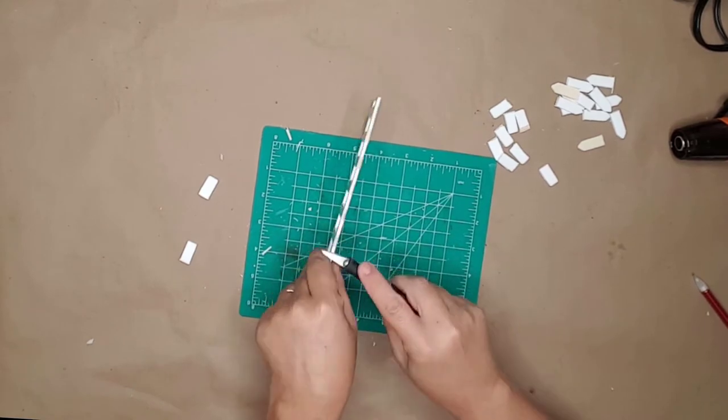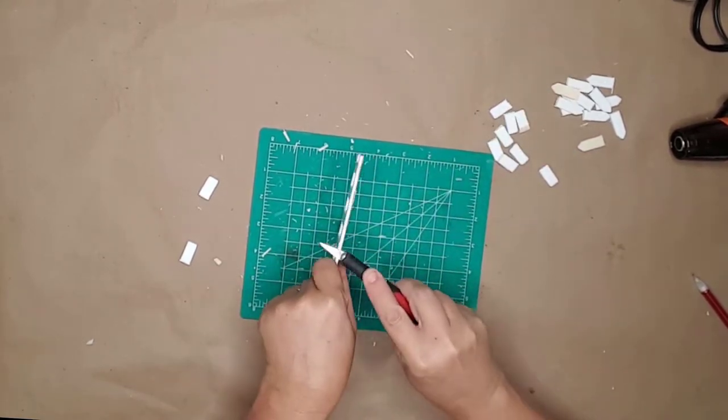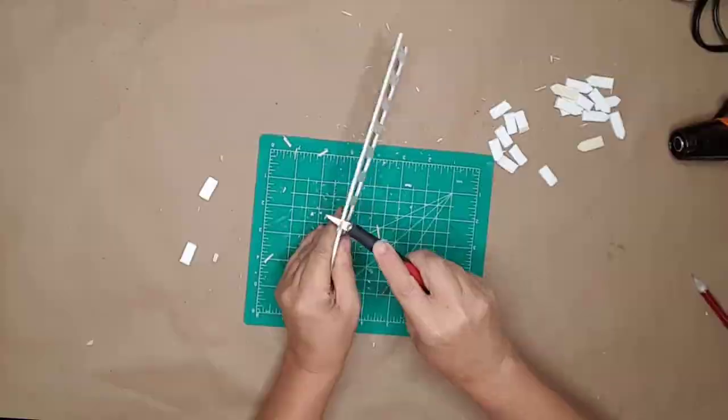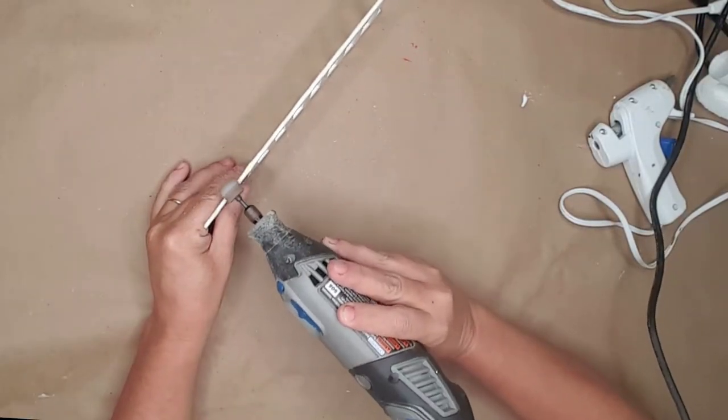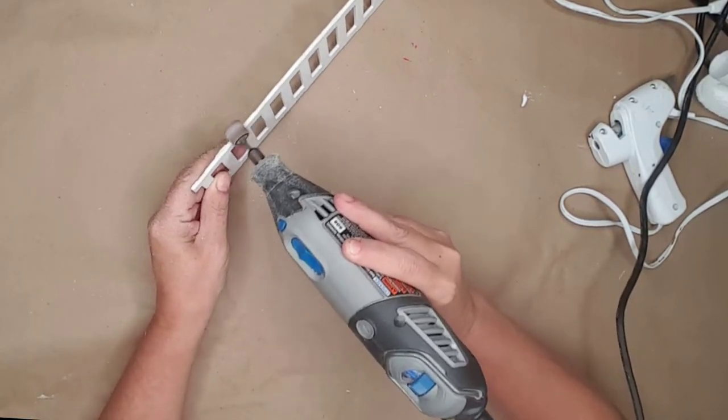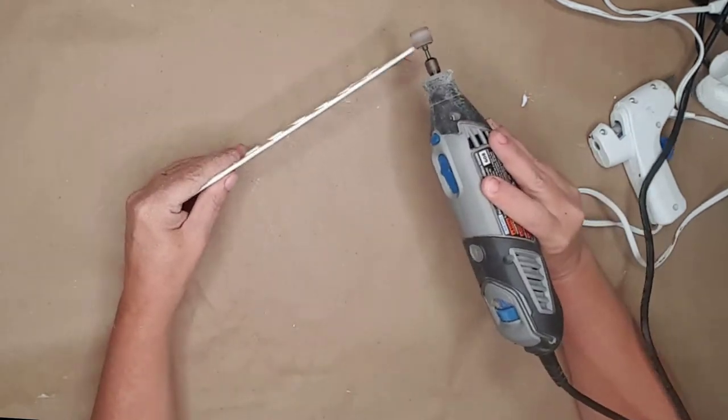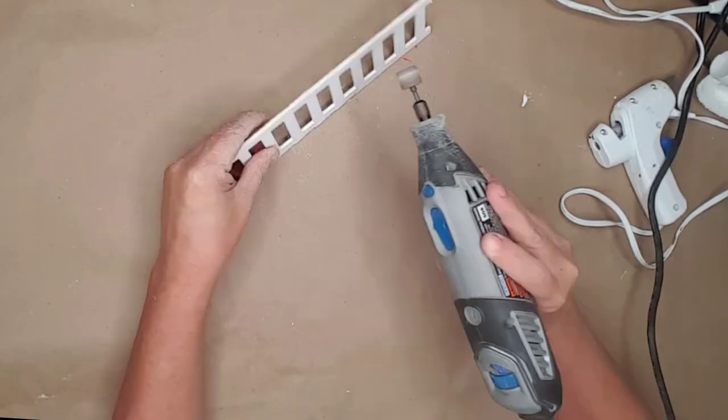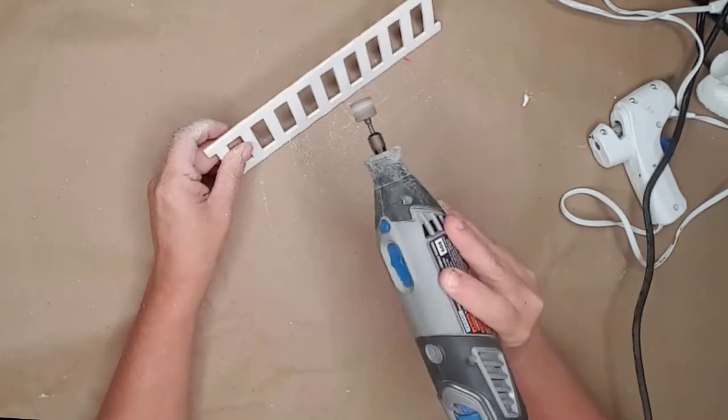After I had cut all the pieces off, I used my utility knife to smooth the wood as much as I could. I then used my dremel tool to sand the edges in an attempt to make them completely straight.